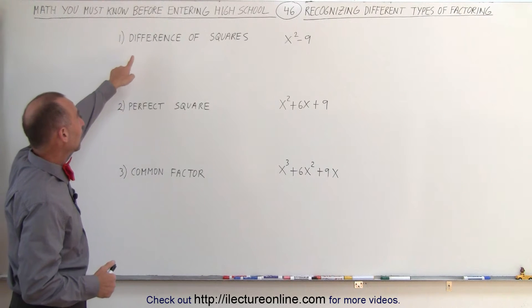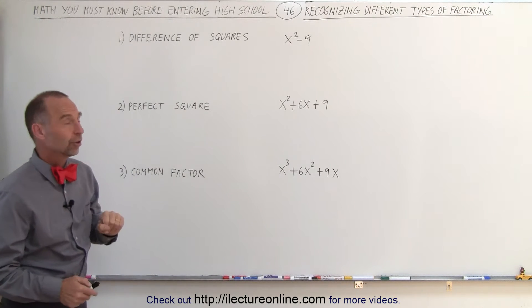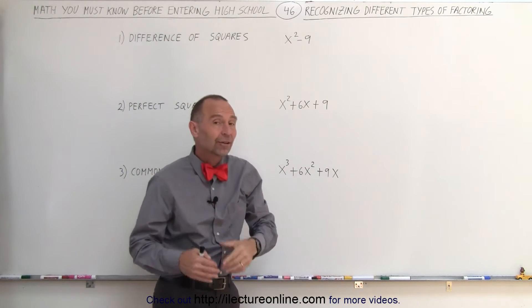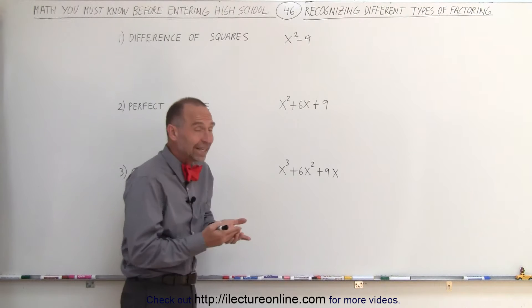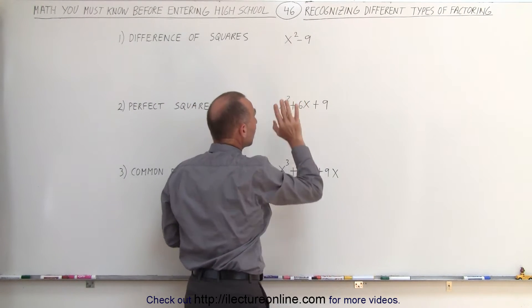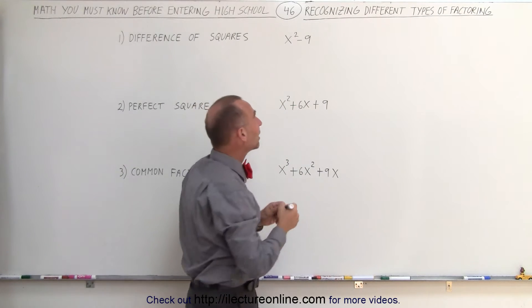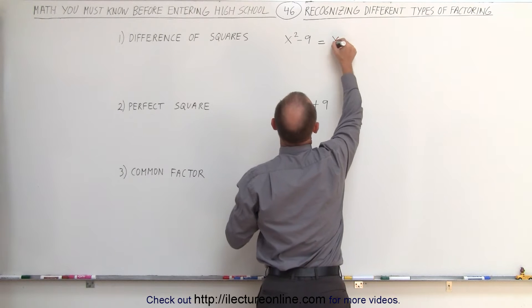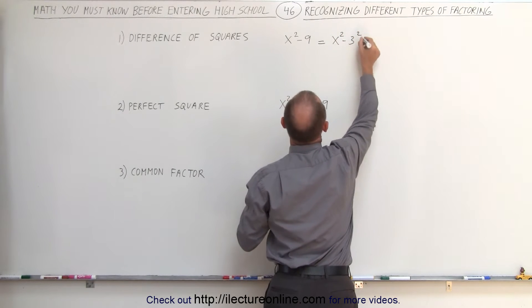The first one is what we call the difference of squares. Now here we have only two terms, x squared minus 9, and at first it may not be apparent that it is indeed the difference of squares. It is the difference of something, the difference of x squared and 9, but you know what? You can rewrite the 9 as 3 squared.